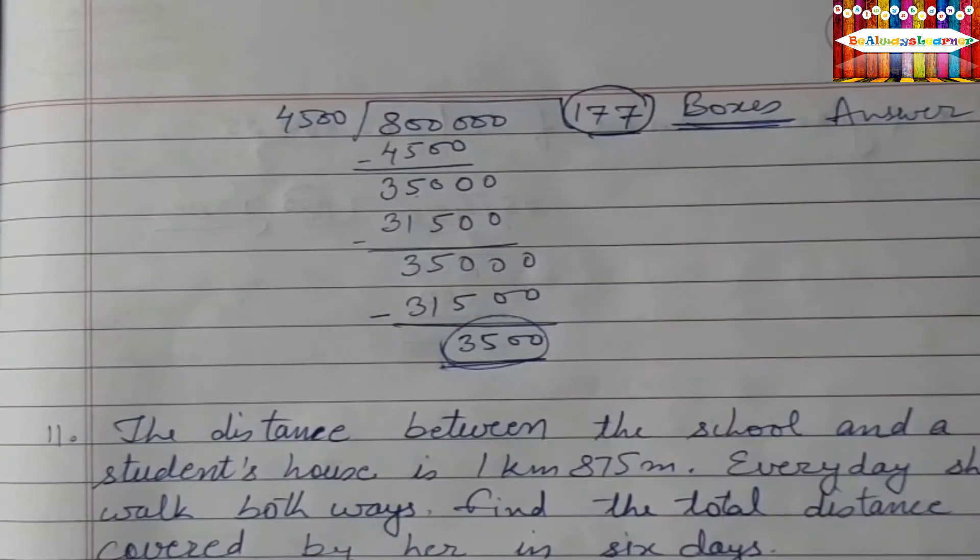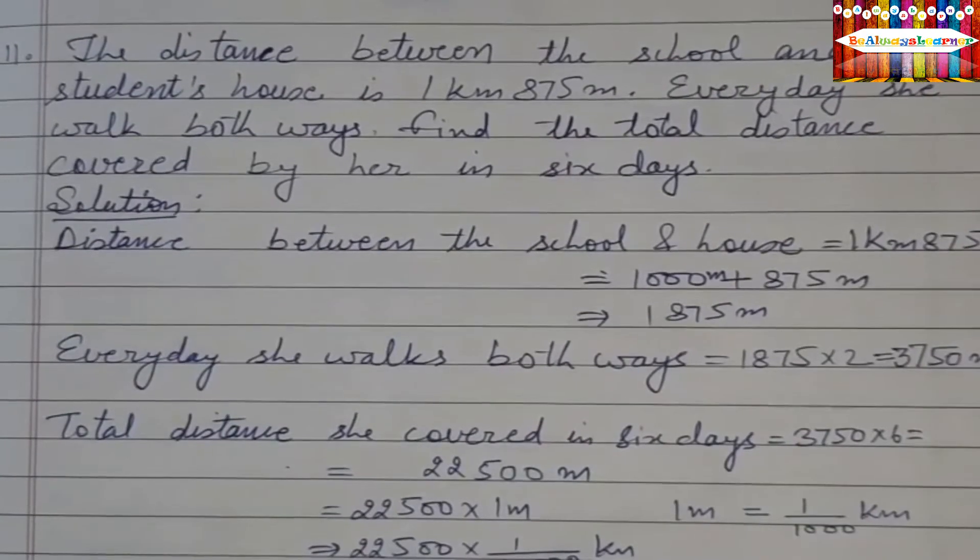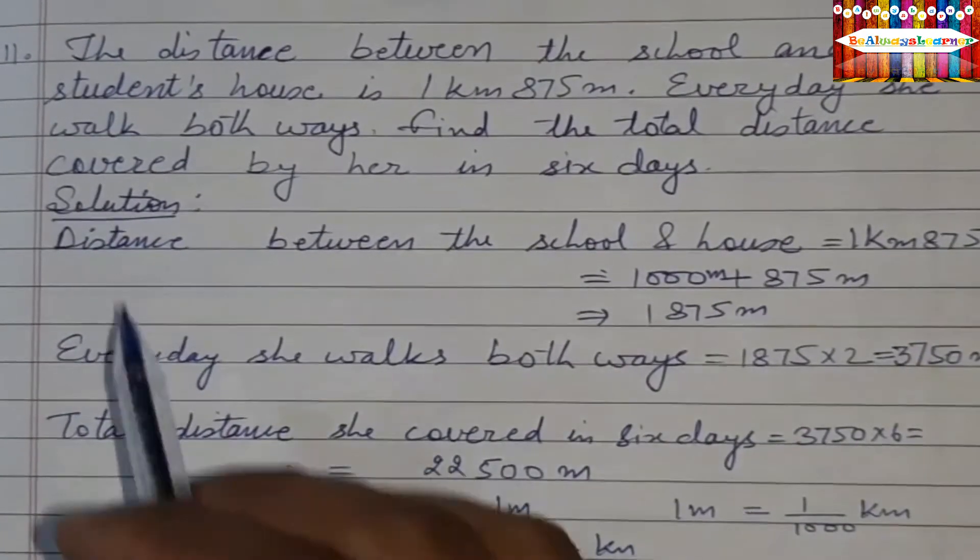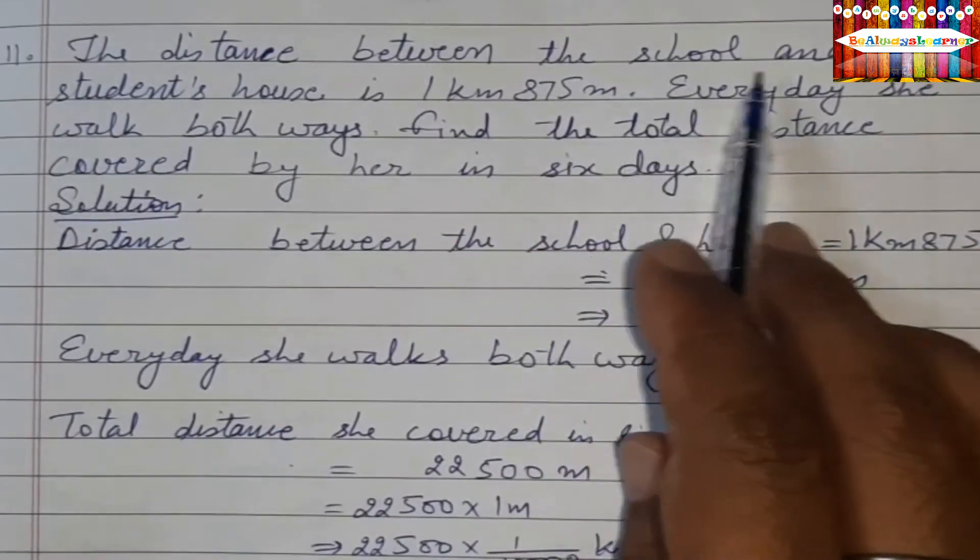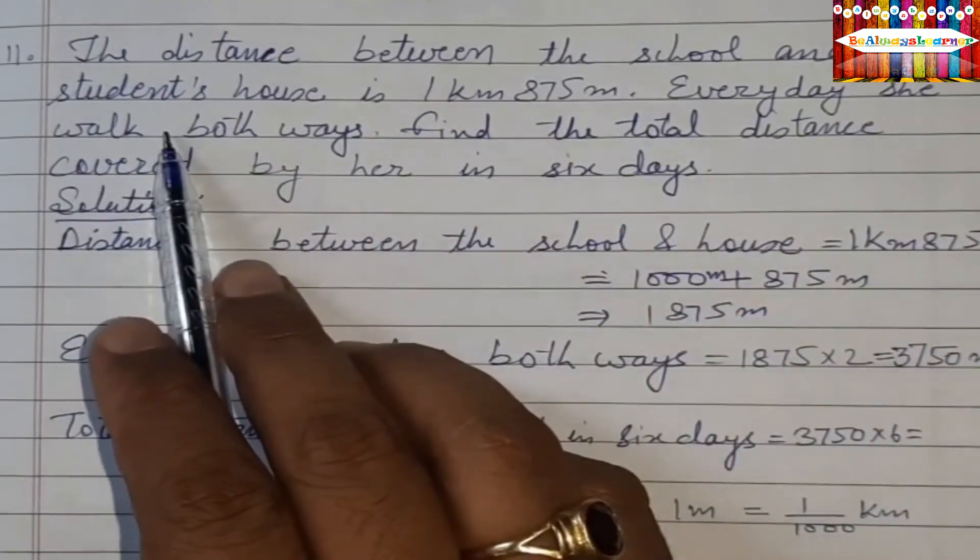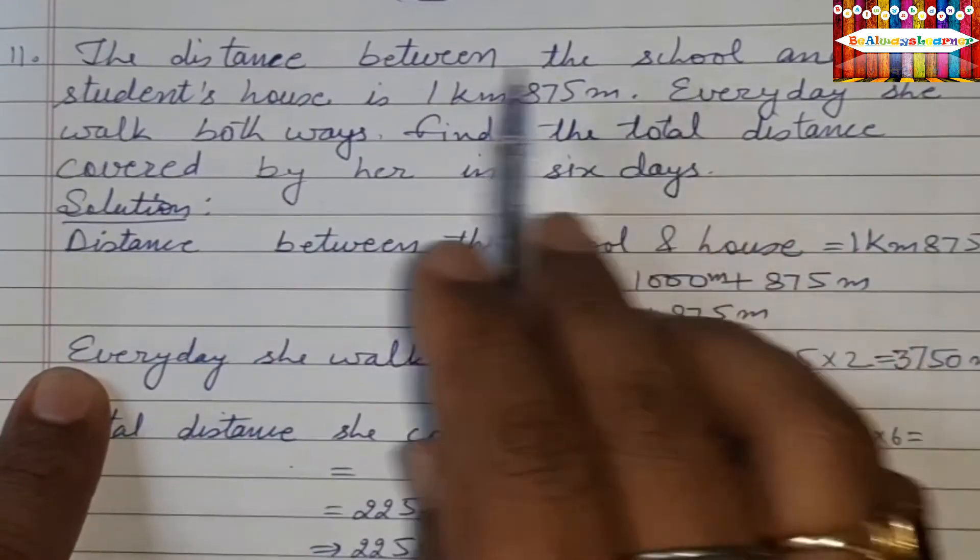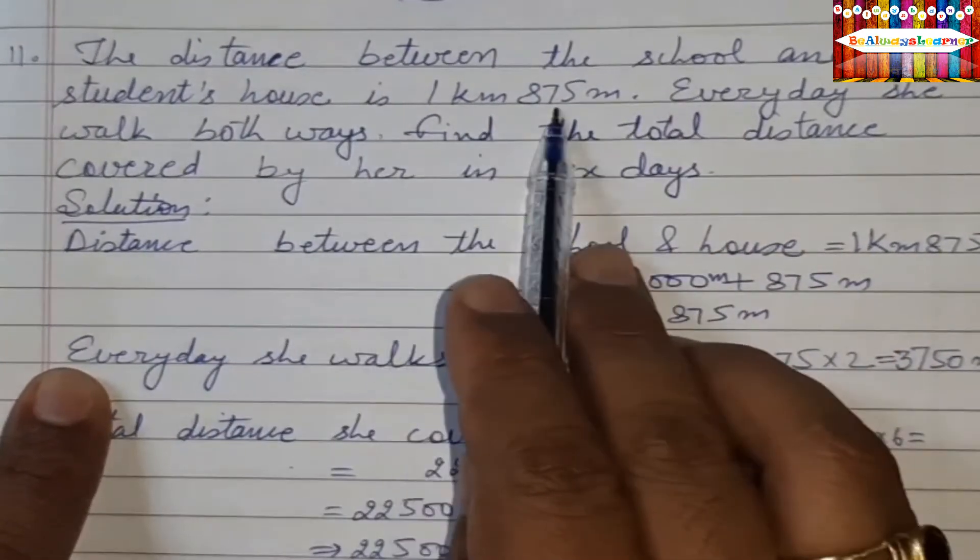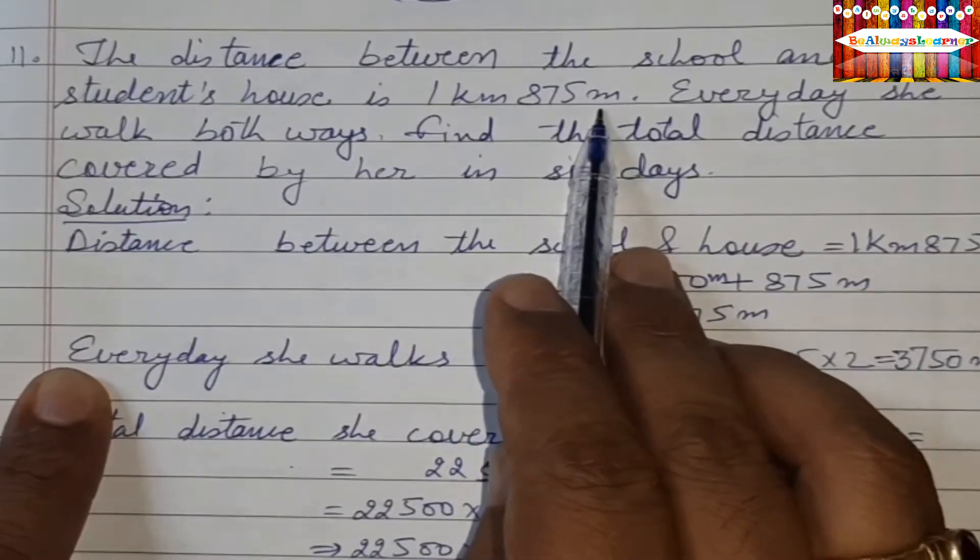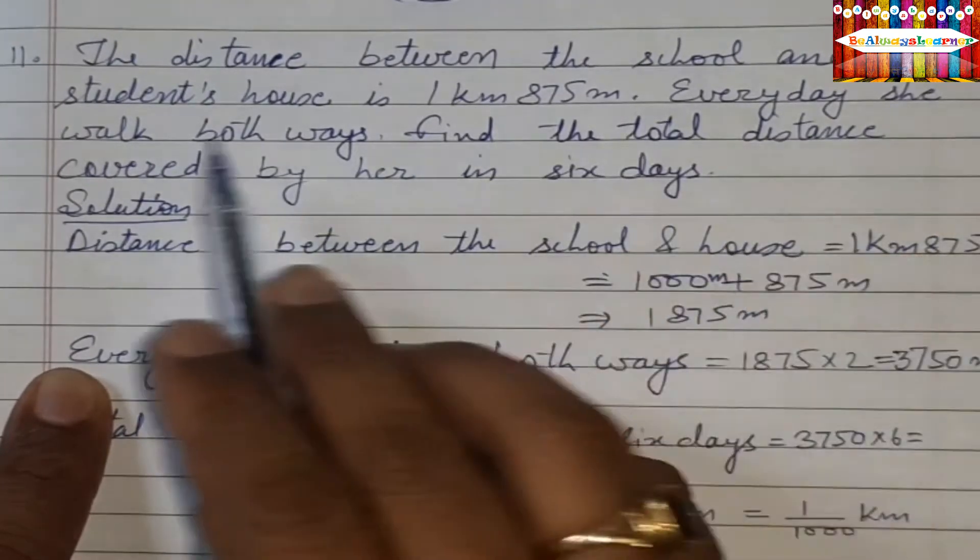Next question is 11th question. What is the distance between the school and a student's house? The distance between the school and the house is 1 km 875 meters. Every day she walks both ways.